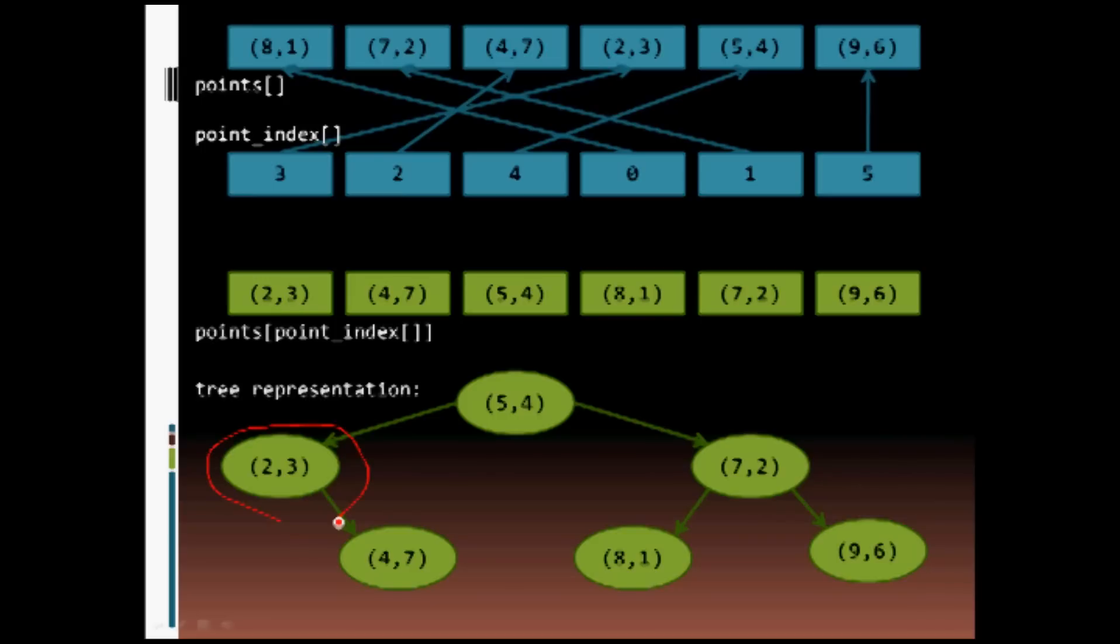this left subtree node 2,3 is represented in that position in the KD tree, based on it being in the leftmost position in our KD tree array, which is represented by points index 0, holding the index 3,